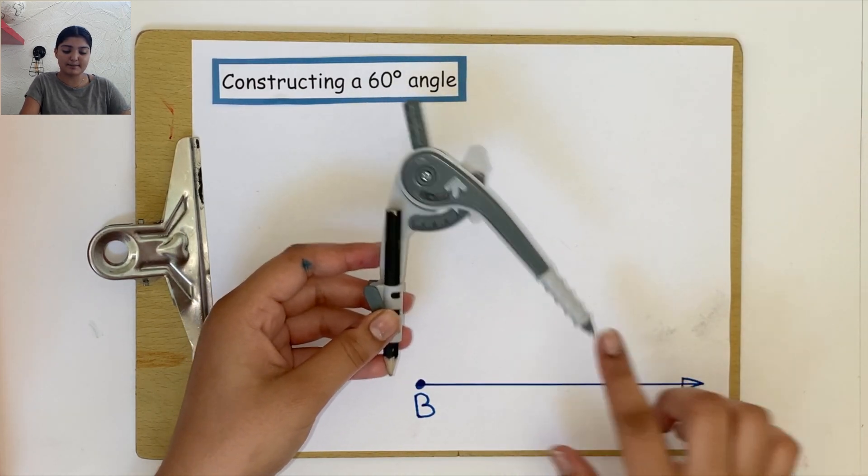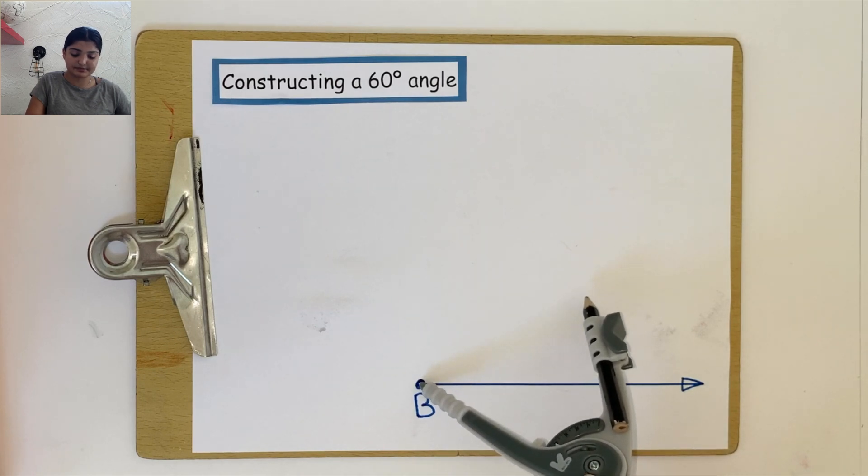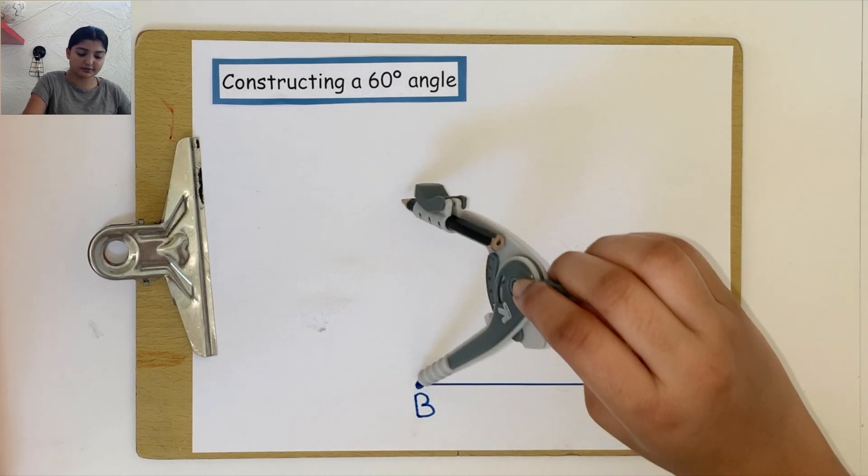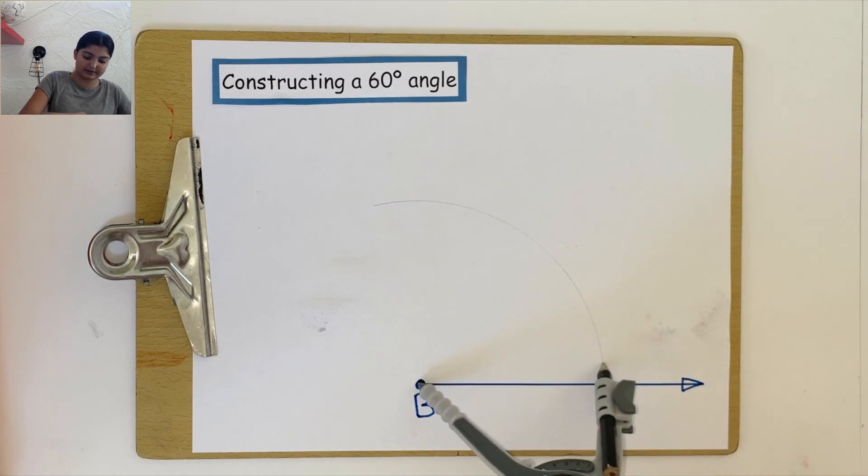We can take the point of our compass and place it on point B, making an arc that cuts our horizontal line.